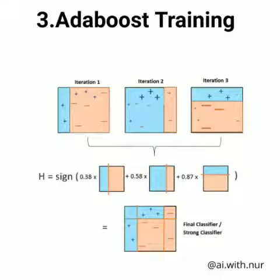The third stage is AdaBoost training. In AdaBoost training, decision stumps are used to split the correctly classified part of the image from the wrongly classified part. As shown in the image, the plus sign represents correctly classified regions and the minus sign represents wrongly classified regions. Less weightage is given to the correctly classified portion and more weightage to the wrongly classified portion. Iterations are performed and finally a strong classifier is produced as the result.